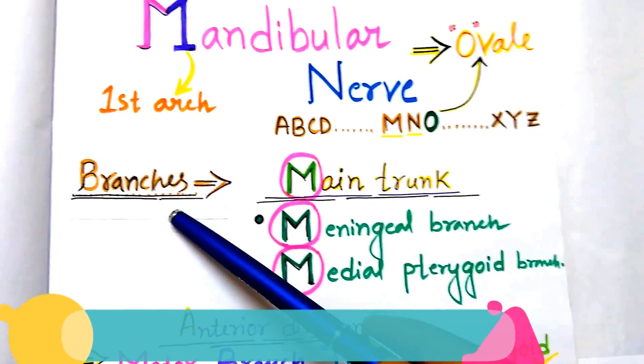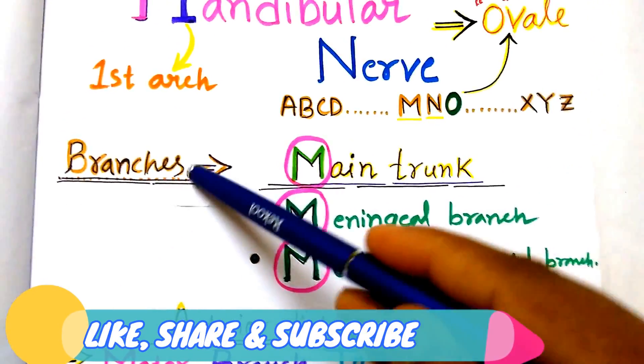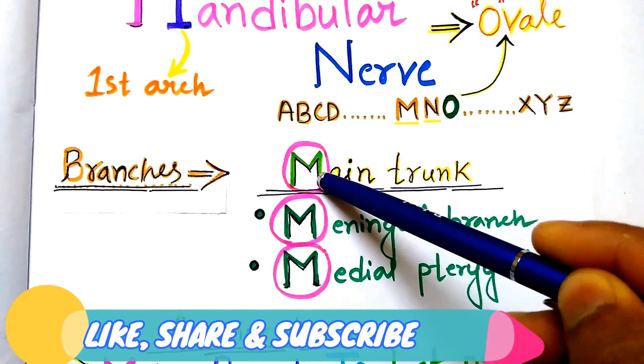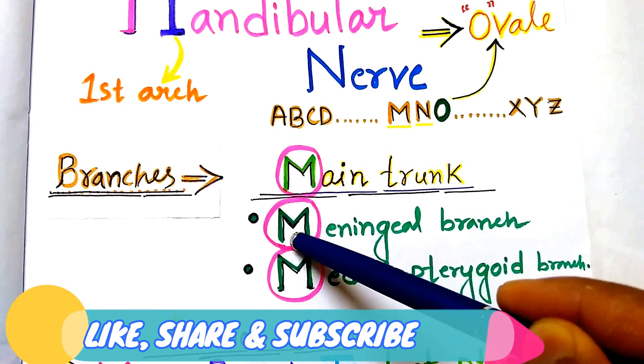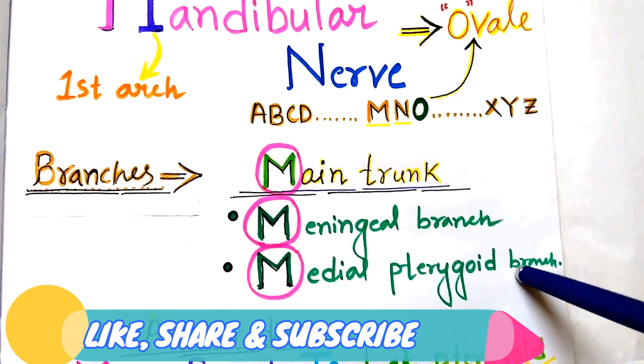Now about the branches. The main trunk. How to remember the main trunk branches? It is everything about M. M for main trunk, and the branches are M for meningeal branches and M for medial pterygoid branch.